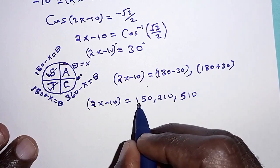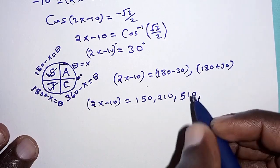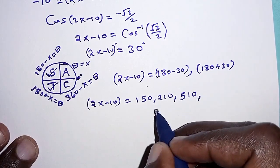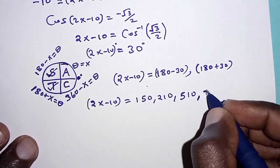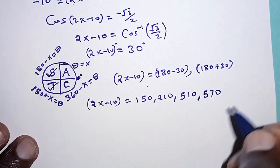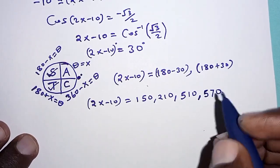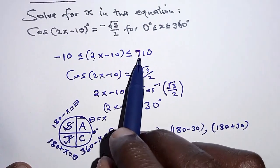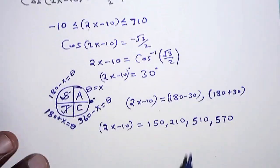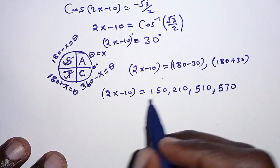So the next revolution, we will have 360 plus 150, that is 510. And again, 360 plus 210, that is 570. If we move to the third revolution, the values that we will get will be past 710. So we are going to stop.